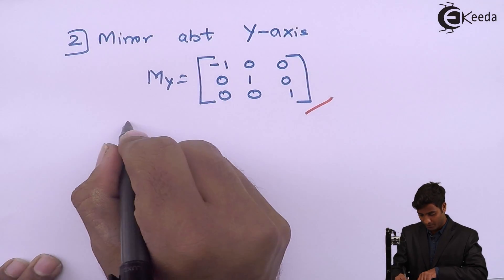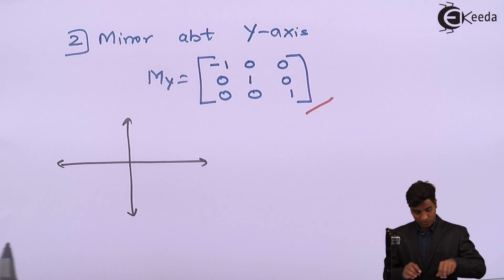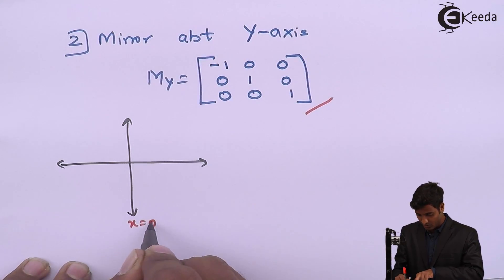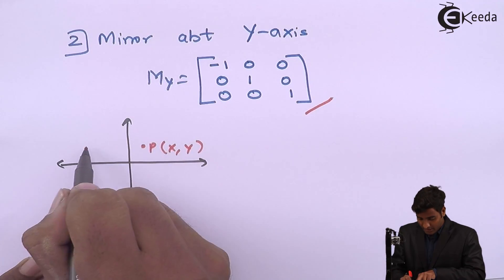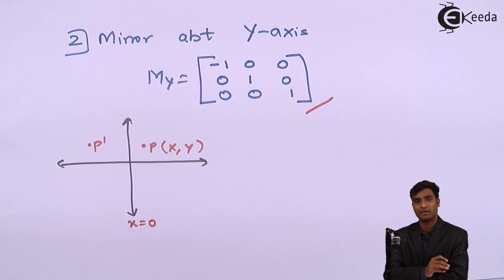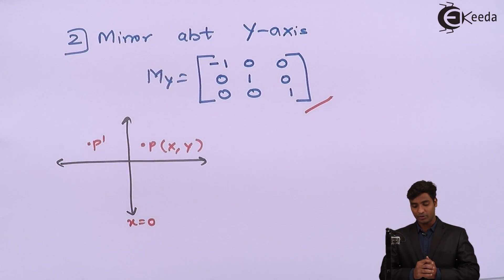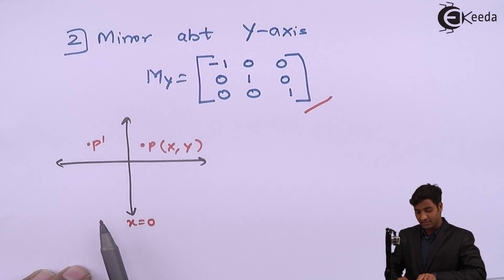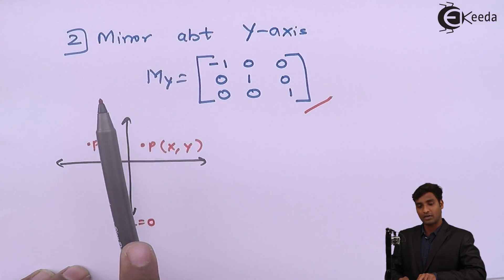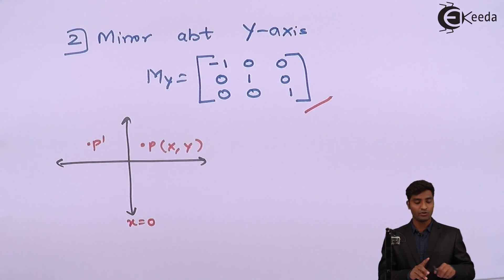After performing this mirror transformation, the figure changes as follows: the line x equal to 0 was in place, the point P(x, y) was reflected, and the reflected point is now represented as P-dash. We have completed the mirror about the y-axis. Since the original line had some x-coordinate equal to a, we need to translate that line back to its original position.